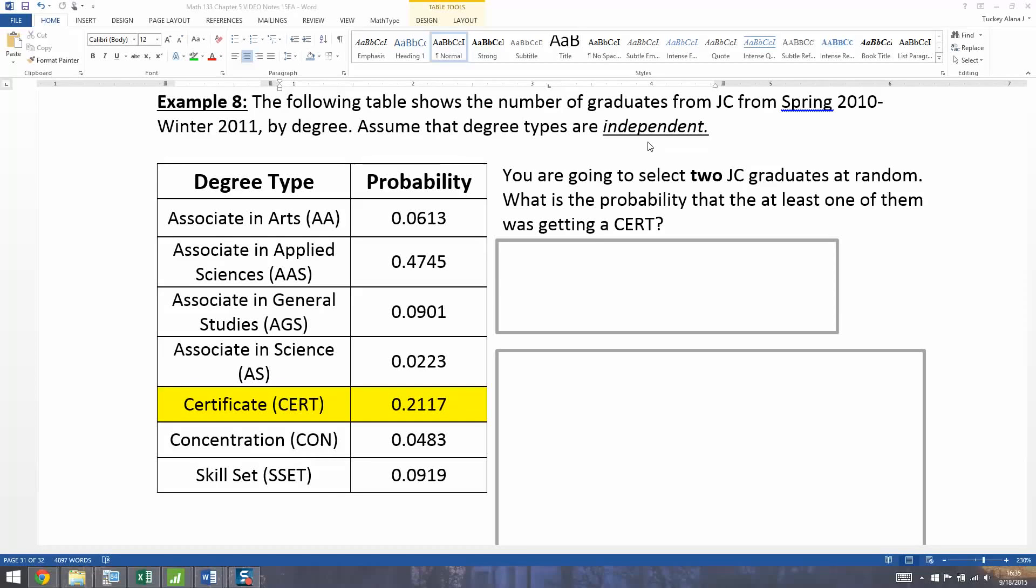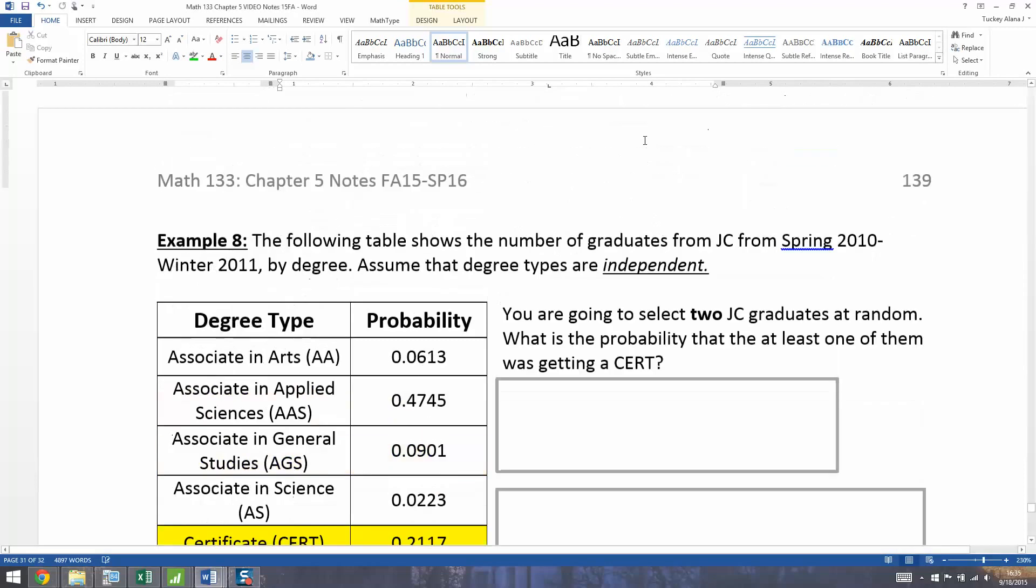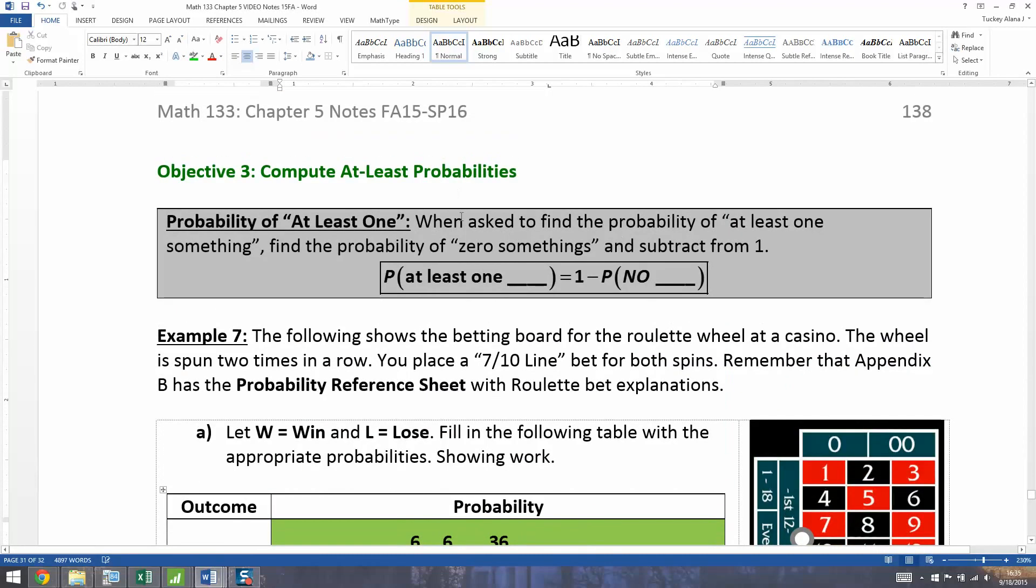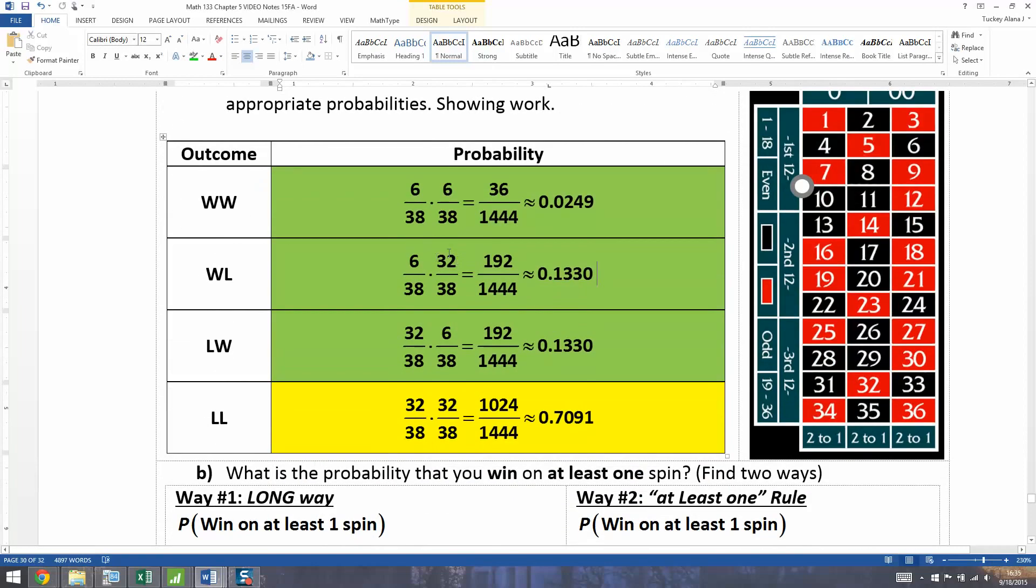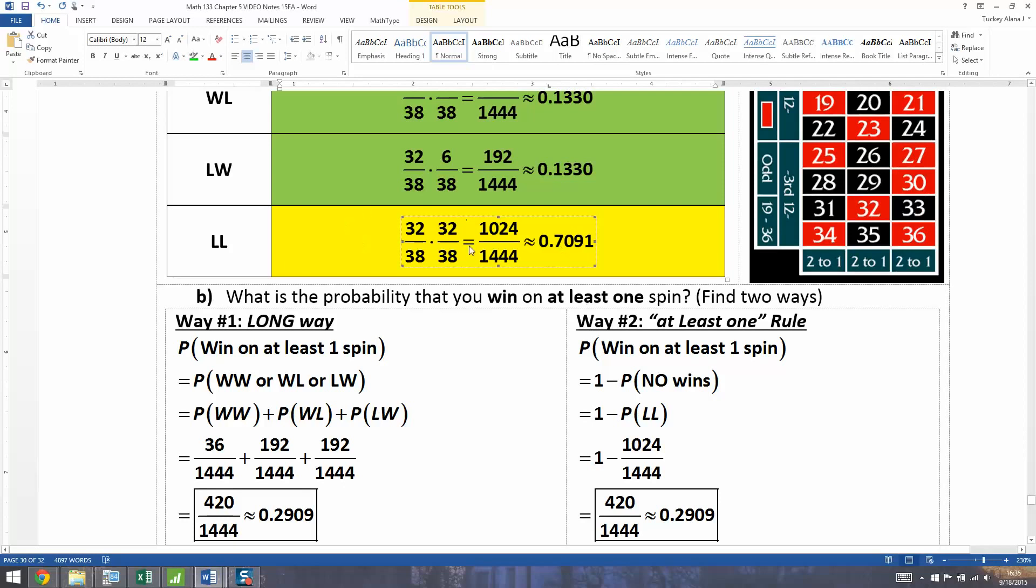Now we want to take what we've learned about the at least one rule and apply it to a couple new situations. So let me go back and review it real quickly. The at least one rule says if you want to find the probability of at least one something, then you find the probability of zero somethings and subtract that from one.